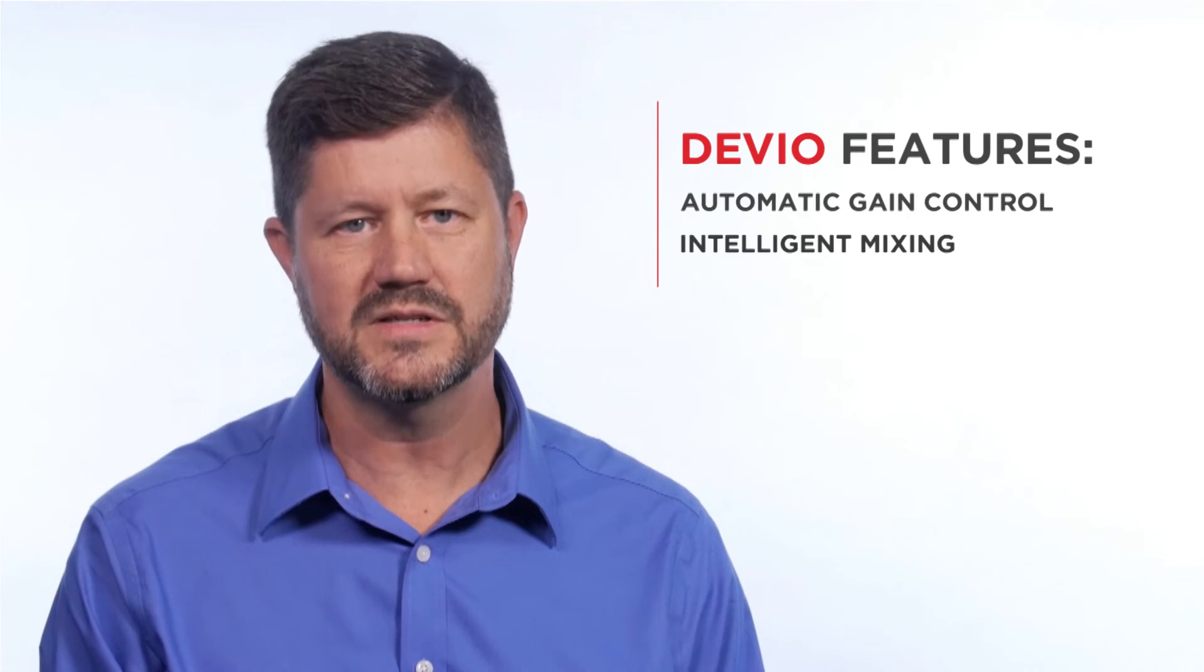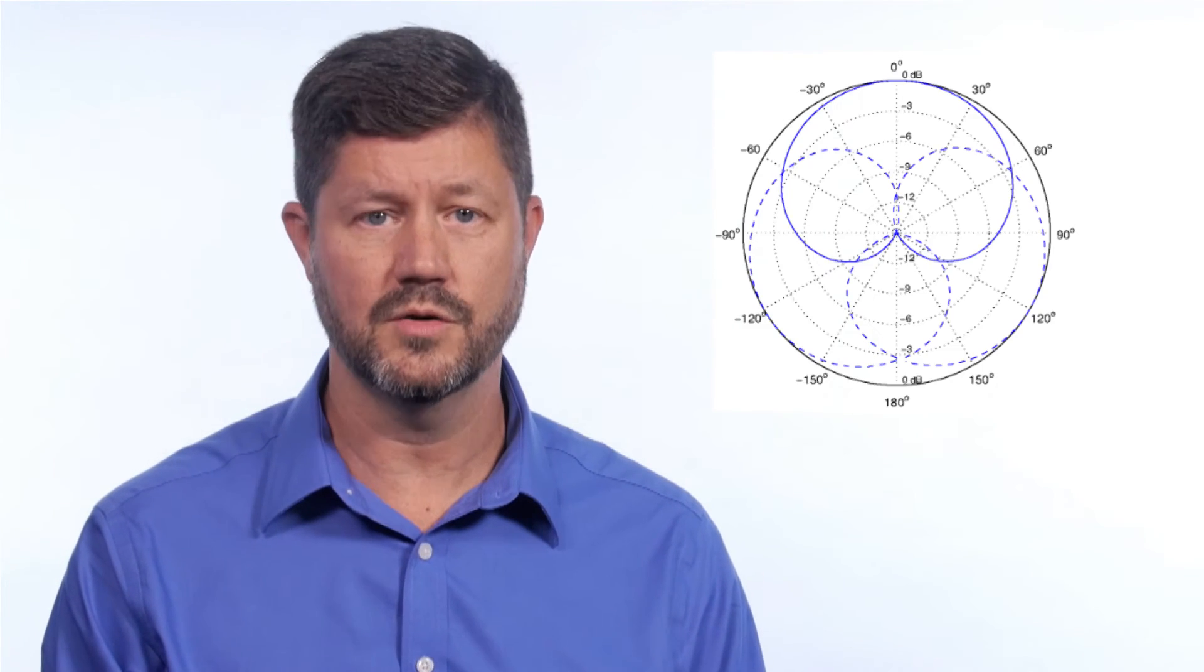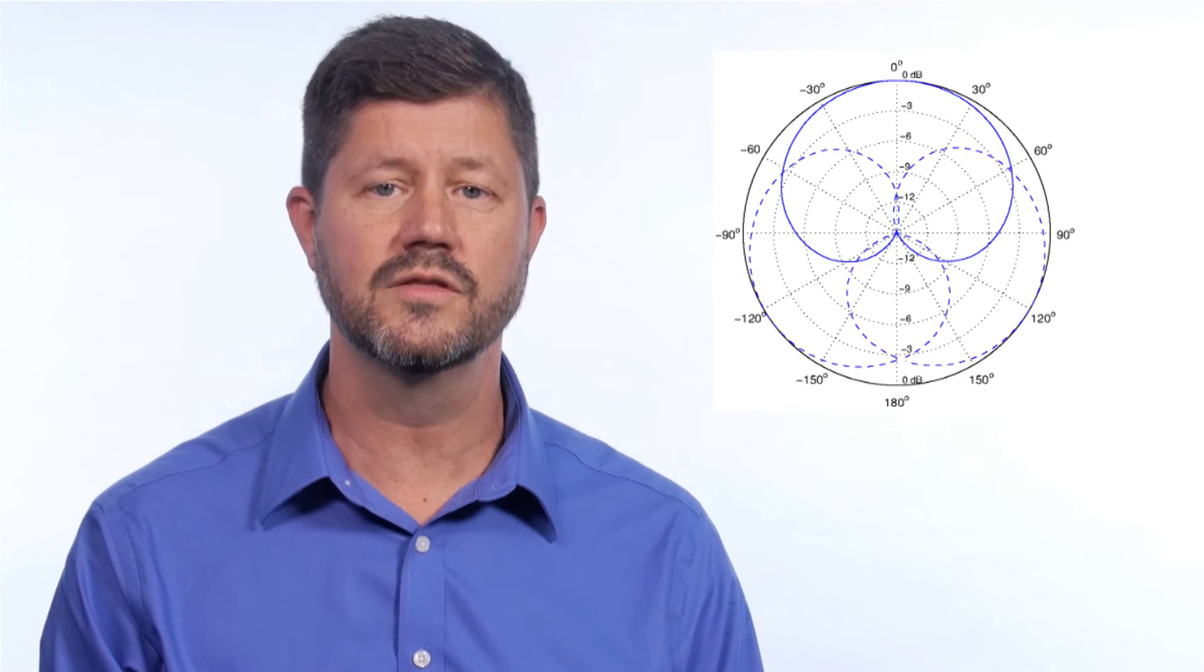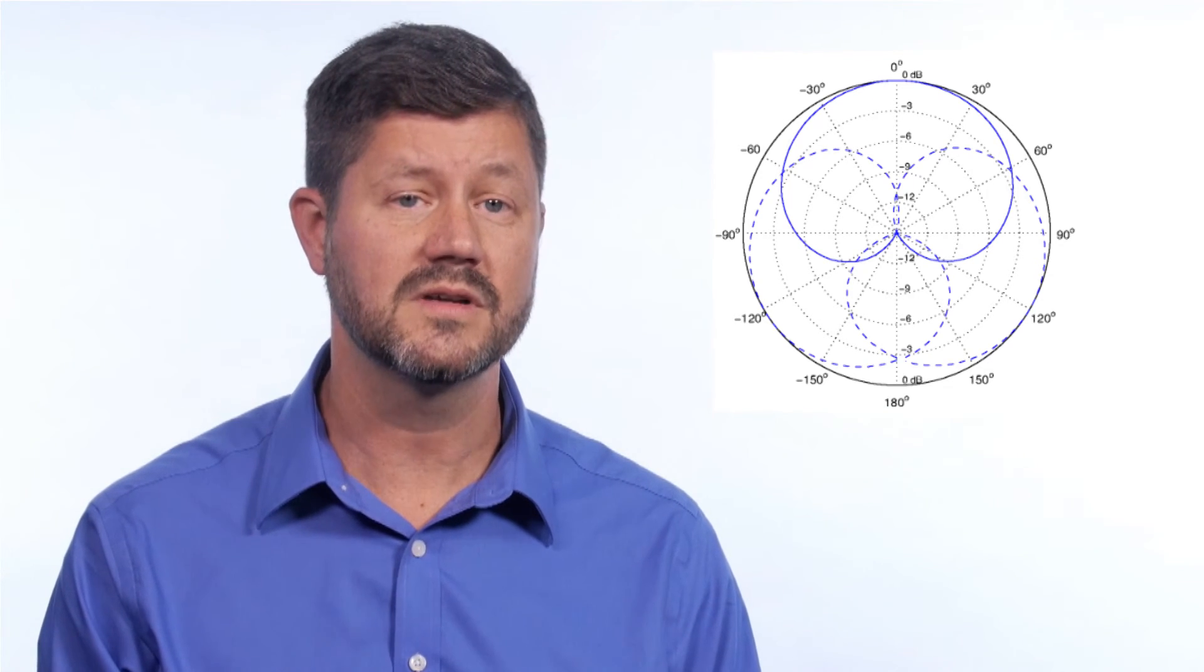Devio-enabled rooms are powered by a host of features, including automatic gain control and intelligent mixing. This means Devio automatically adjusts the volume in the room depending on the volume of the talkers. The microphone, which cuts the room in three zones, listens to the other talkers in the room so Devio can intelligently mix it all together for participants on the other end of the call.